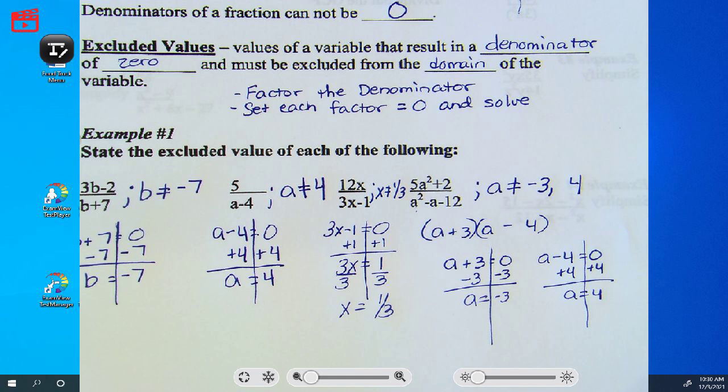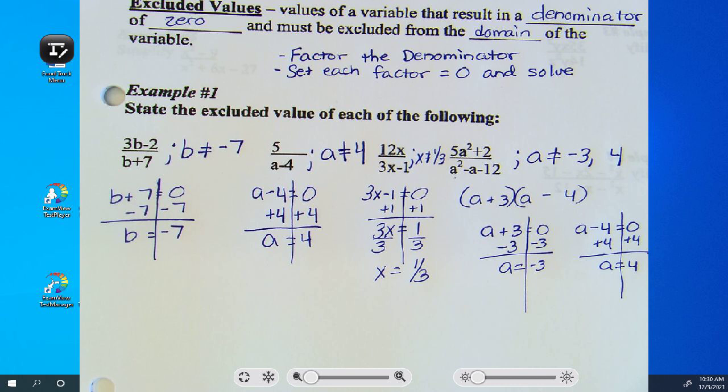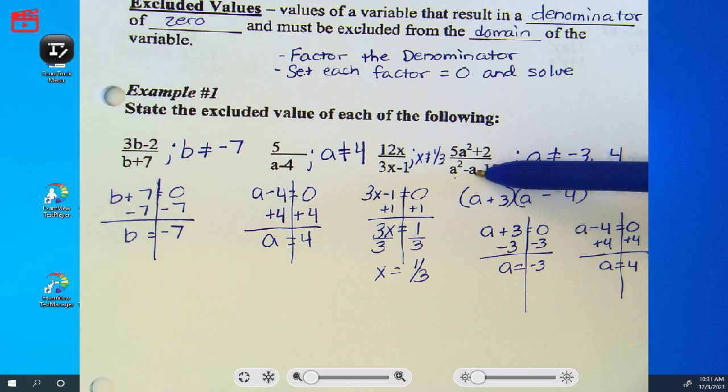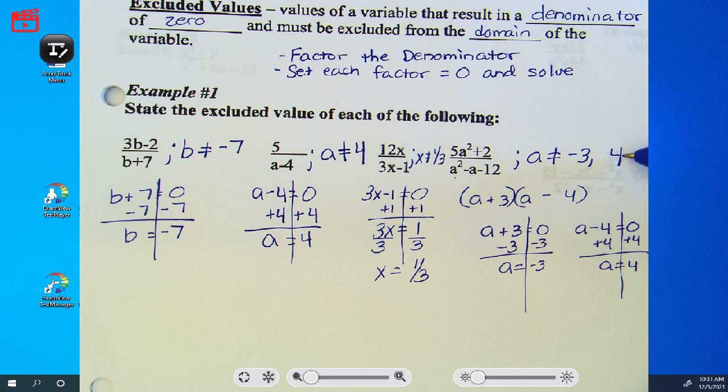This time we have two restrictions. They both make the denominator 0. If I put negative 3 in here, negative 3 squared is 9. 9 minus a negative 3 is 12. 12 minus 12 is 0. Can't do it. 4 squared is 16. Minus 4 is 12. 12 minus 12 is 0. Both of those values make that denominator 0. Which you cannot have.